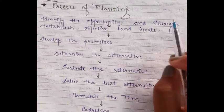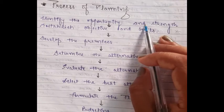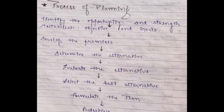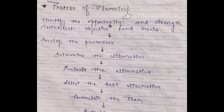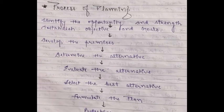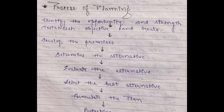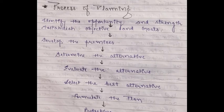The first step in the planning process is to identify the opportunities and strengths. The analysis and planning team should scan both the internal and external environment and find the related opportunities and strengths to develop an information system. You need to analyze your internal and external environment.